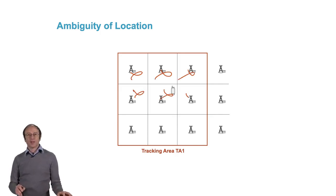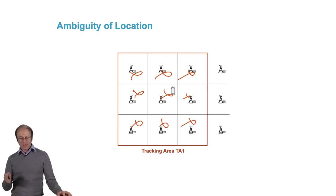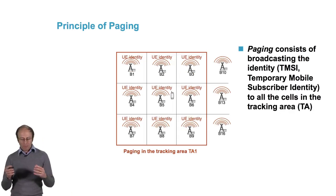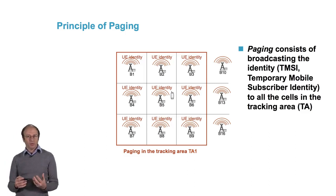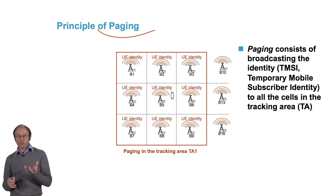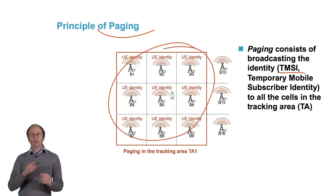So, when you try to reach the terminal, you have to broadcast its identity to all the cells of the tracking area. Here, you can see that we have multiplied by nine the number of messages that are sent to try to reach the terminal. The principle of broadcasting the same message to several cells is called paging. Paging consists in broadcasting the identity, the TMSI temporary mobile subscriber identity, to all cells of the tracking area.